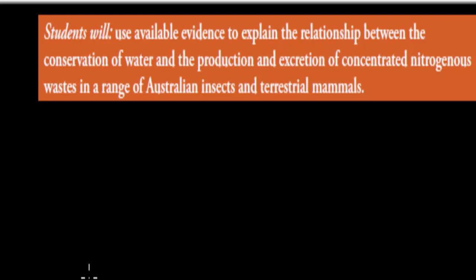In this video we're going to go over the difference between the concentrations and the form of nitrogenous waste in insects and mammals and also compare fish as well. So I'll read the actual dot point: use available evidence to explain the relationship between the conservation of water and the production and excretion of concentrated nitrogenous waste in a range of Australian insects and terrestrial mammals. Terrestrial just means land, so land mammals.